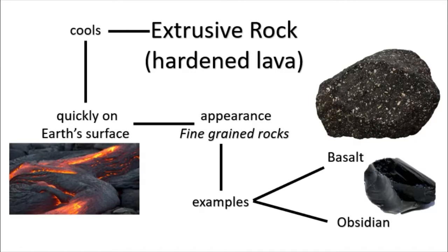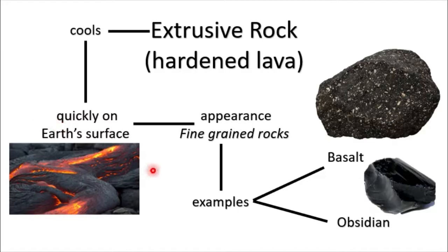The first igneous rock is the extrusive rock. Extrusive means external — they are the hardened lava. In a volcano, the magma is spewed out from the mouth of the volcano, and when found outside of the volcano, it is called lava. When this lava cools down, since it is exposed to the ambient temperature of the atmosphere, it cools down quickly. When they cool down quickly, the appearance of the rock will be a fine-grained rock.